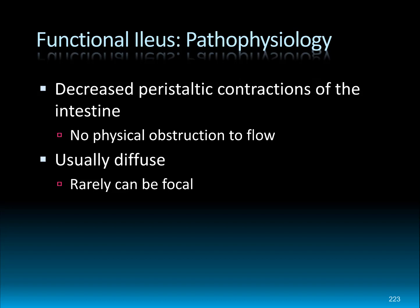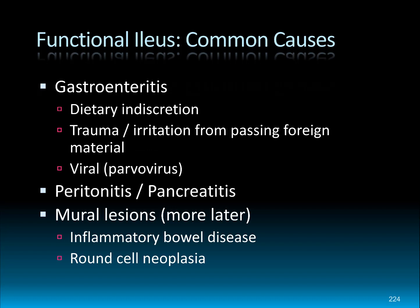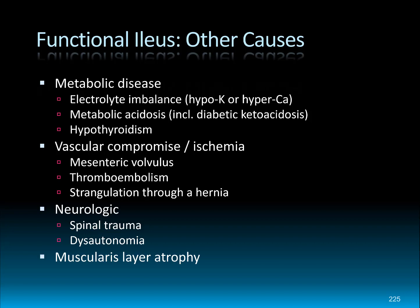Usually it's a diffuse condition, although occasionally there can be focal or regional functional ileus. The more common causes are honestly the most common causes of vomiting and diarrhea in our patients. Gastroenteritis is a big one, often due to dietary indiscretion, and can be secondary to trauma and irritation from passing foreign material without obstruction. Infectious causes — viral, bacterial, parasitic — are also on that list. Peritonitis or pancreatitis can cause secondary functional ileus. Mural lesions like inflammatory bowel disease and round cell neoplasia are on that list too, and I'll talk about those more in chapter five.